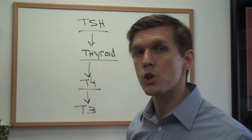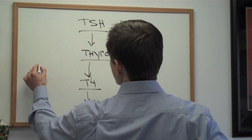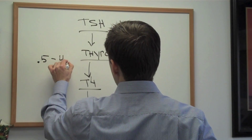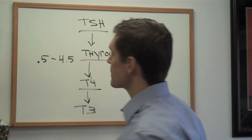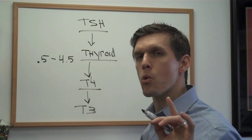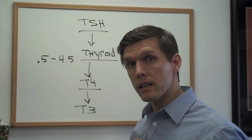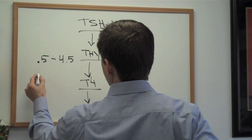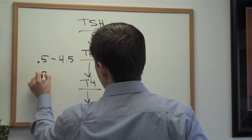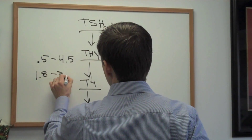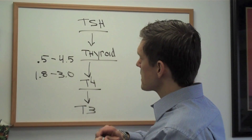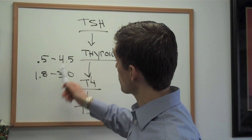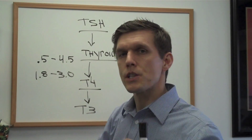As far as the numbers go, where should they be? Most physicians will run tests and the range they're looking for is 0.5 to 4.5. However, a more sensitive and, in my opinion, a better number to look at is 1.8 to 3.0. This is a little bit more sensitive because you could be slightly above 3.0 and still have symptoms.